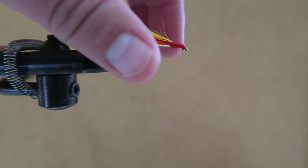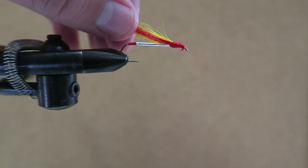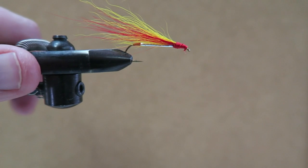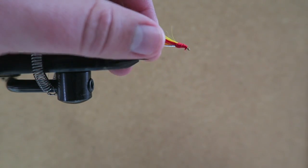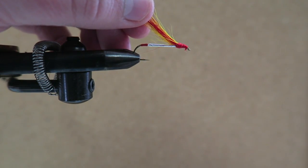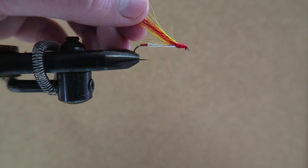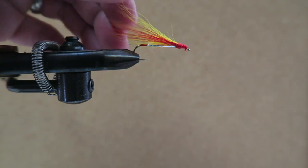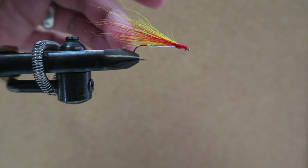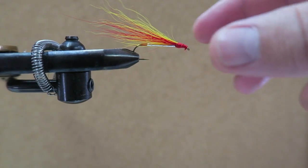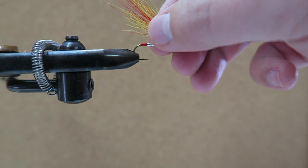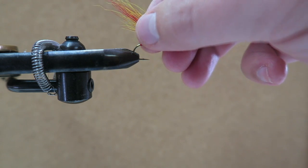There it is, the Mickey Finn. A couple of optional things you can do: instead of the red tag at the end, you could put a little yarn tail on the back. I've seen it done like that before, or like a pinch of red hackle.